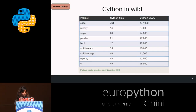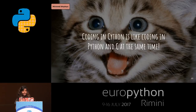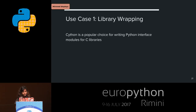Cython is used in many big projects: NumPy is one, and AstroPy as well. It's like coding in C and Python at the same time. The first use case we'll look at is library wrapping.